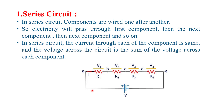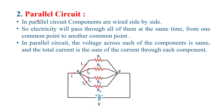If we apply a voltage with the help of a battery, the current flowing through all the resistors is the same. But the voltage across R1 is V1, R2 is V2, R3 is V3, and R4 is V4. The total voltage across the circuit is V1 + V2 + V3 + V4, but the current in the circuit is the same value I. This is called a series circuit.